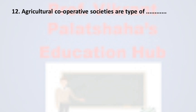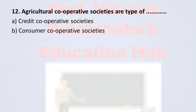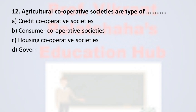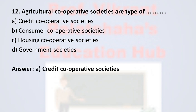Question number 12: Agricultural cooperative societies are a type of ___. Option A: trade cooperative societies. Option B: consumer cooperative societies. Option C: housing cooperative societies. Option D: government societies. The correct option is option A, credit cooperative societies. Agricultural cooperative societies come under credit cooperative societies. Therefore, the correct option is option A.